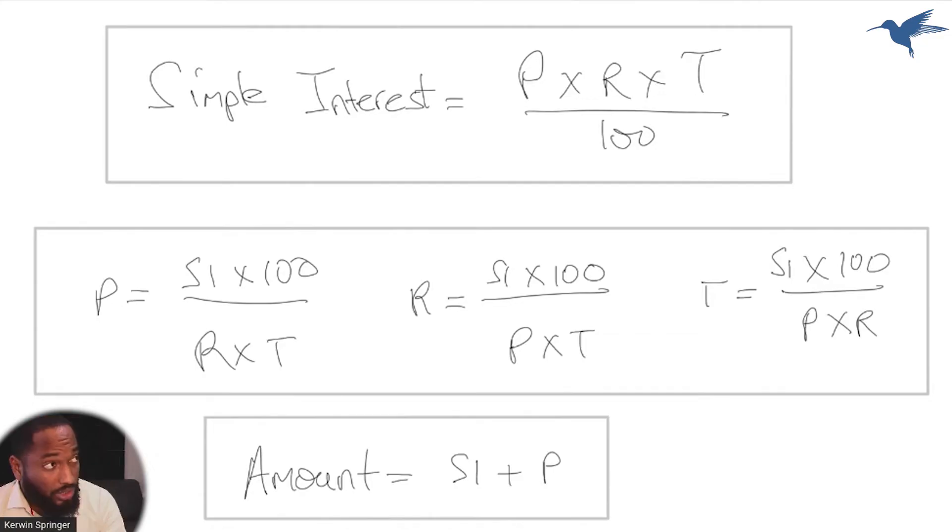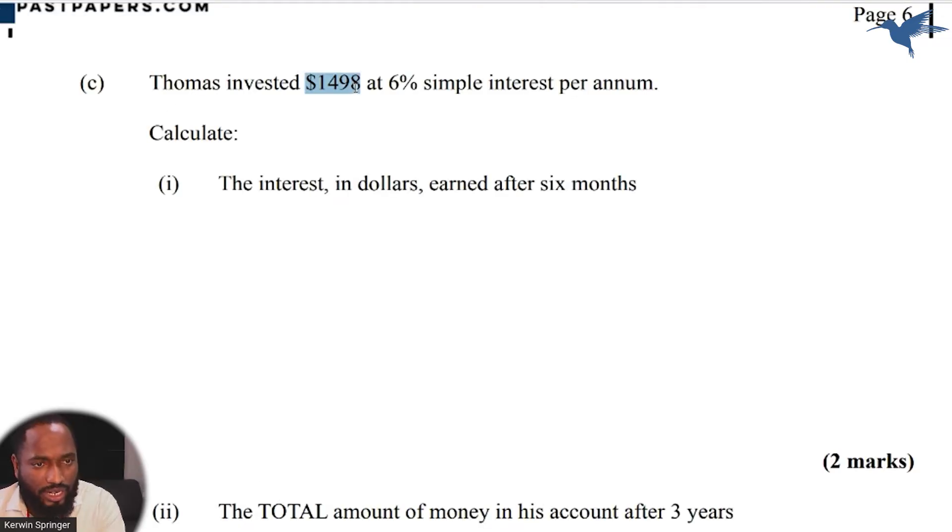Thomas invested $1498 at 6% simple interest per annum. Calculate the interest in dollars earned after six months. Now this is interesting in that we have six months here and we have simple interest per annum.